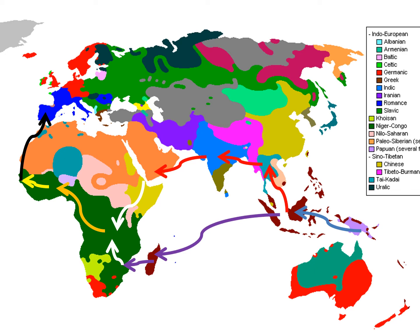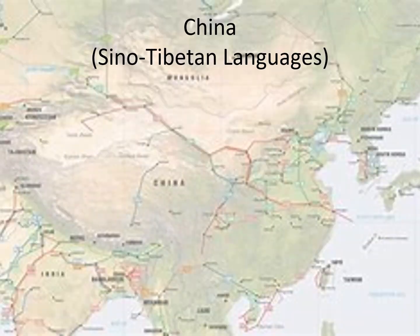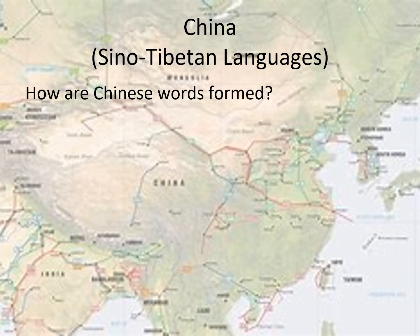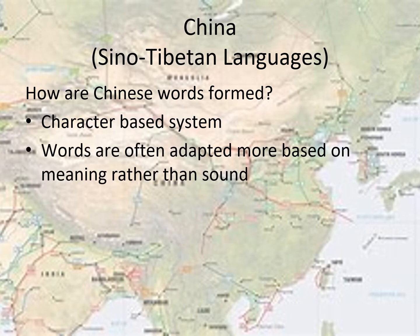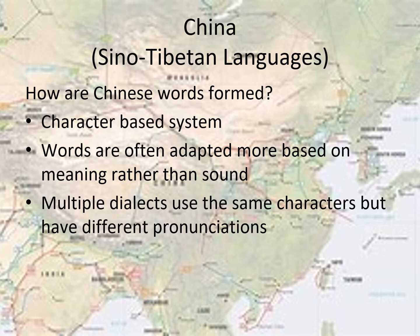Now we're going to change directions and go east into Eastern Asia. Our first stop is China, home to the Sino-Tibetan languages, which include all of the Chinese languages — Mandarin, Cantonese, Shanghainese, Hakka, and more. Before we go bananas in China, we need to talk about how new words are adopted into Chinese. Chinese is a character-based writing system with no alphabet — writing in Chinese is like playing Pictionary, where each word is a picture we call a character. When new things are introduced into Chinese culture, a few characters are selected and put together to make new words, so new words are often introduced based on describing word meaning rather than what the original words sounded like. Many different Chinese dialects or languages use the same characters but pronounce them differently — that's what makes them unintelligible to each other.